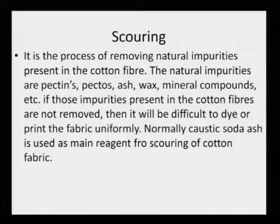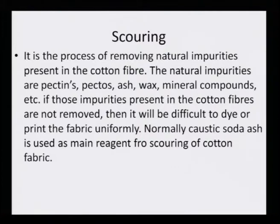Then comes the scouring step. It is the process of removing natural impurities present on the cotton fiber as well as on synthetic fibers. The natural impurities include pectin, pectose, ash, wax, mineral components, and oil stains. If those impurities are not removed, it will be difficult to dye or print the fabric uniformly. Normally, caustic soda is used as the main reagent for scouring of cotton fabric, but scouring can also be done by mild detergents as in the case of silk and wool. Be it any fiber or any fabric, this process is common to all.